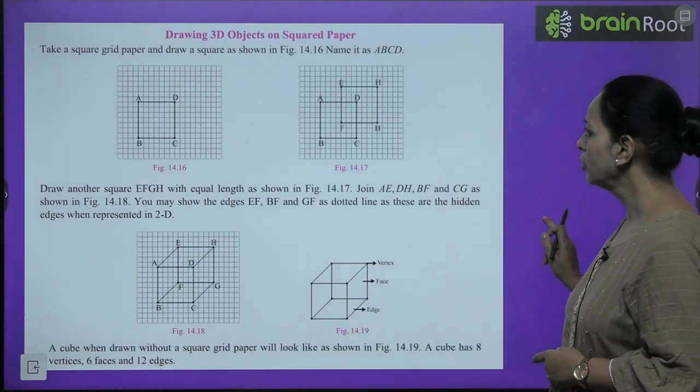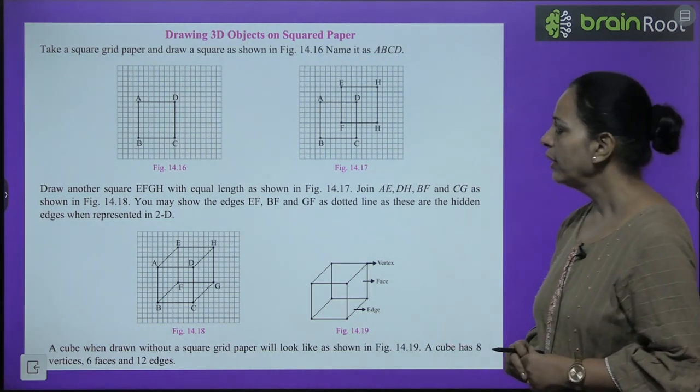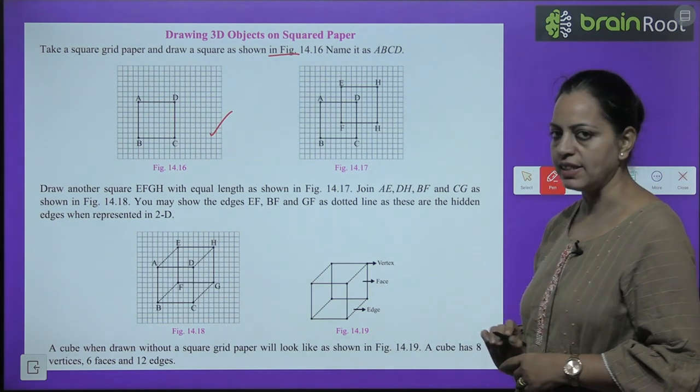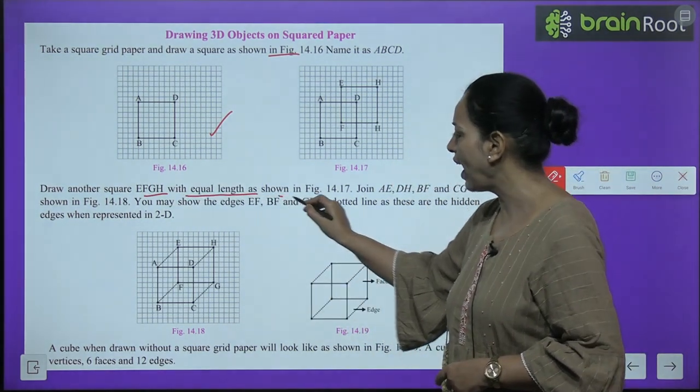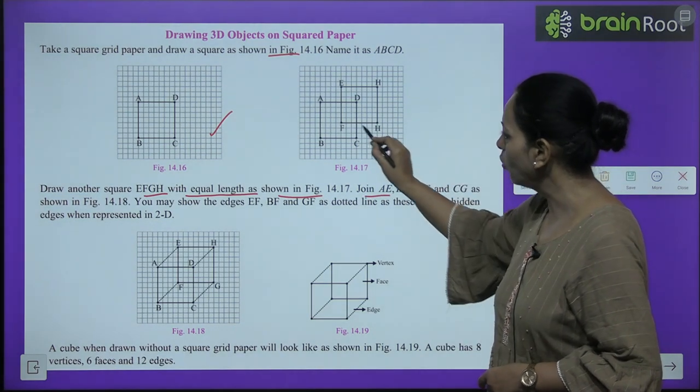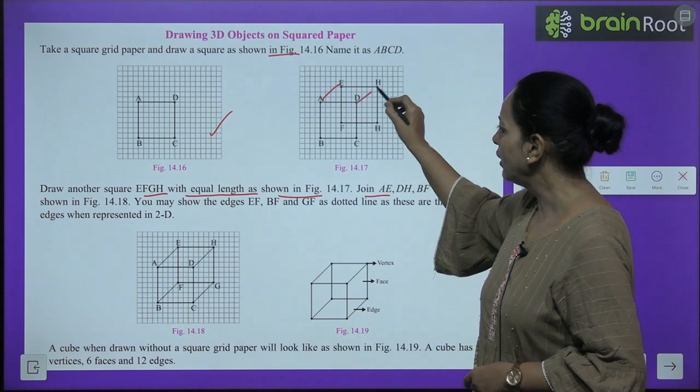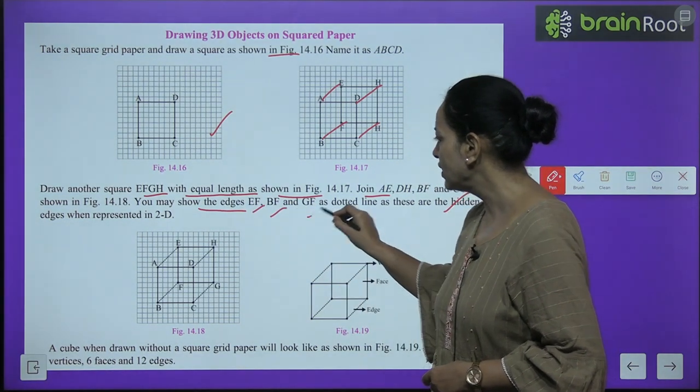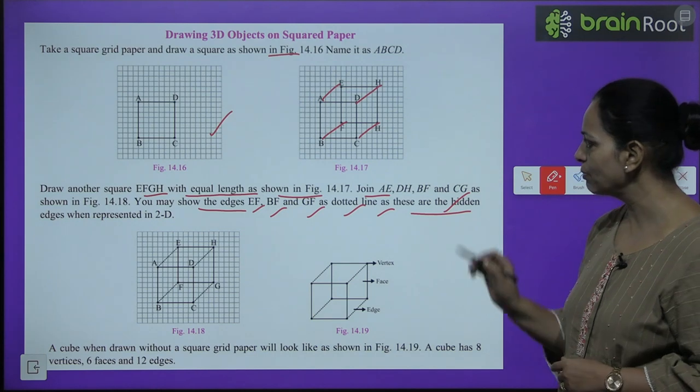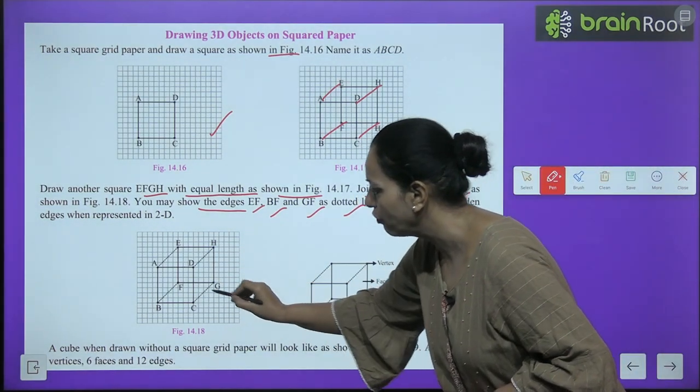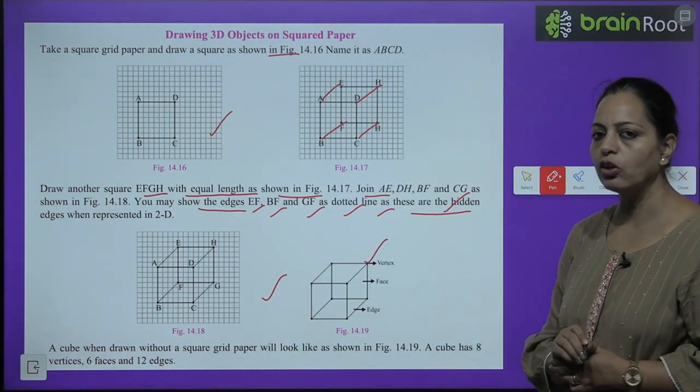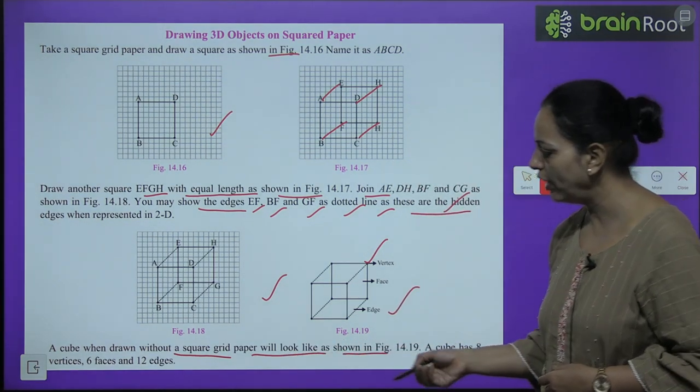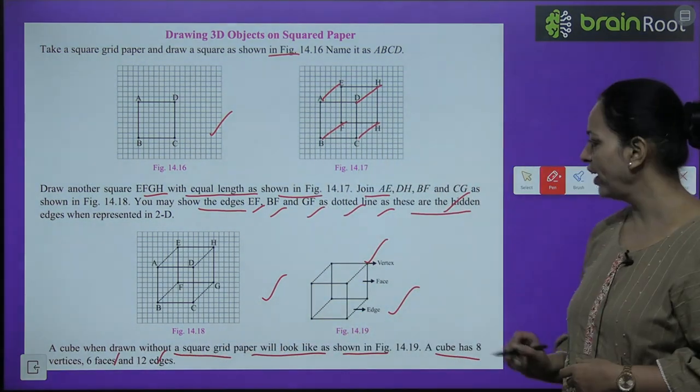Drawing 3D Objects on Square Paper: Take a square grid paper and draw a square as shown, named ABCD. Draw another square EFGH with equal length at some distance. Now join AE, DH, BF, and CG. You may show the edges EF, BF, and GF as dotted lines as these are the hidden edges - some are not visible. So we are getting a cube. A cube when drawn without a square grid paper will look like as shown in this figure. A cube has 8 vertices, 6 faces, and 12 edges.